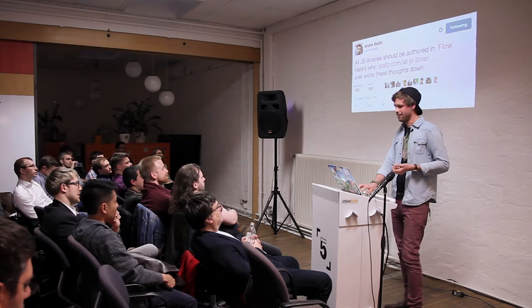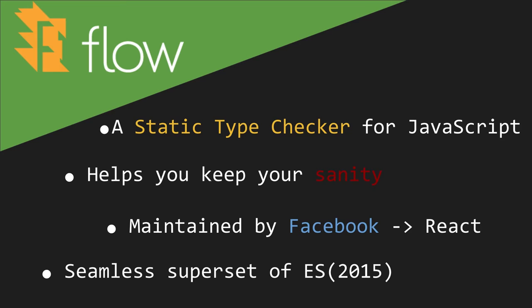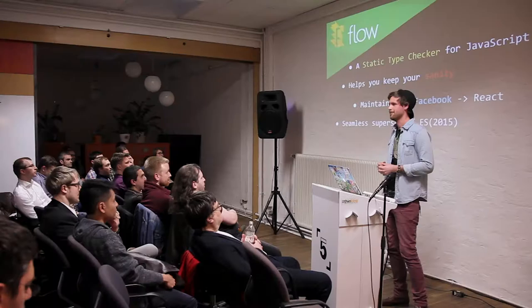Flow itself is a static type checker for JavaScript. It helps you keep your sanity because you don't have to browse through thousands of files just to know which kind of value you expect for a function. It's maintained by Facebook.